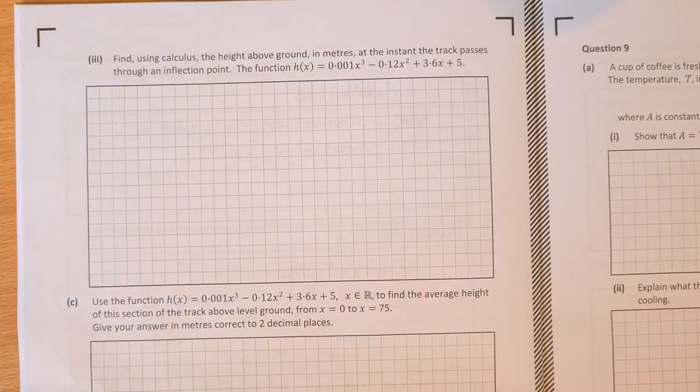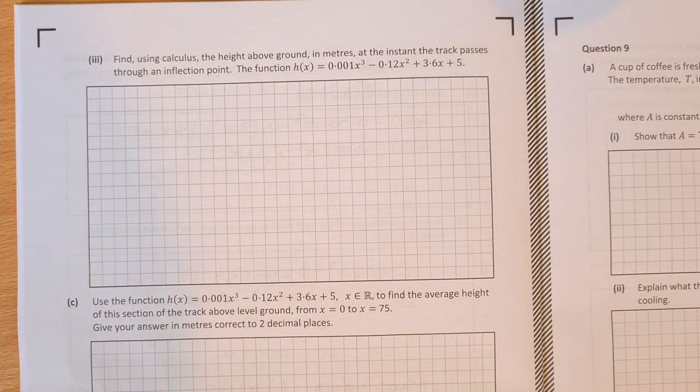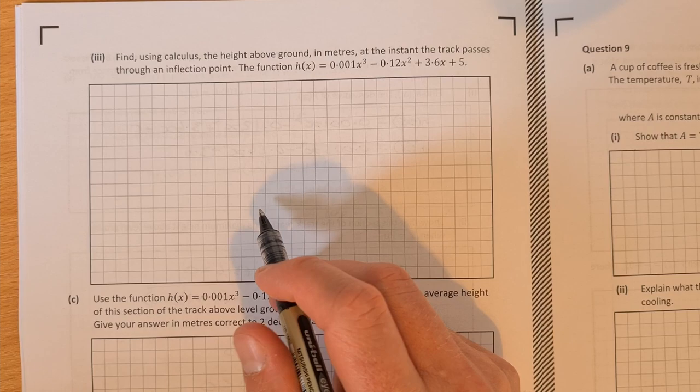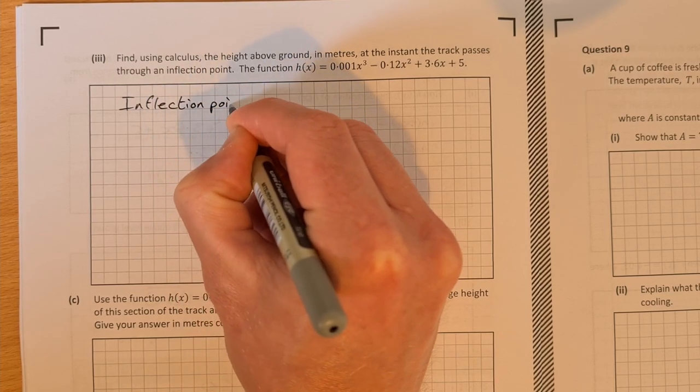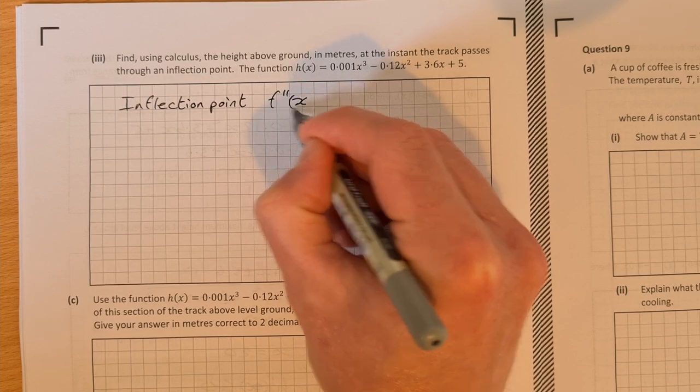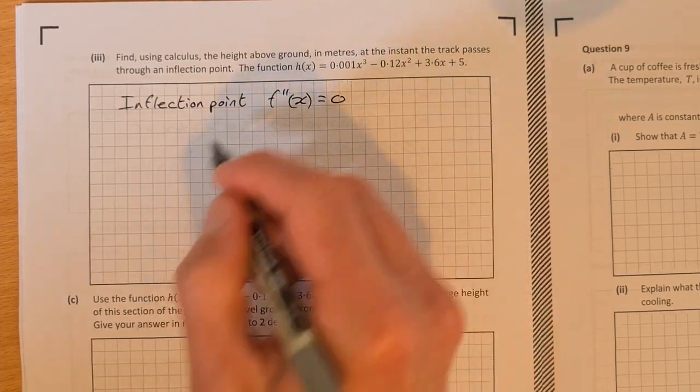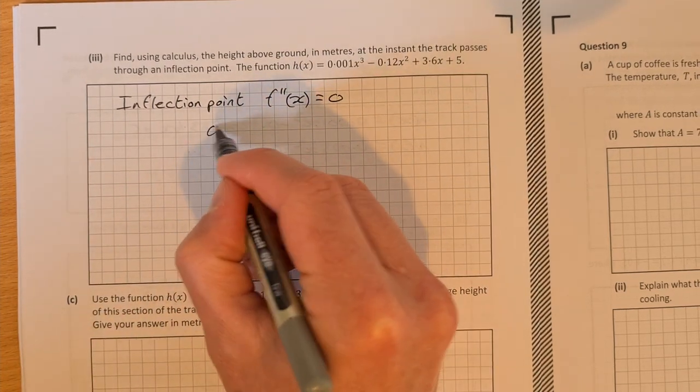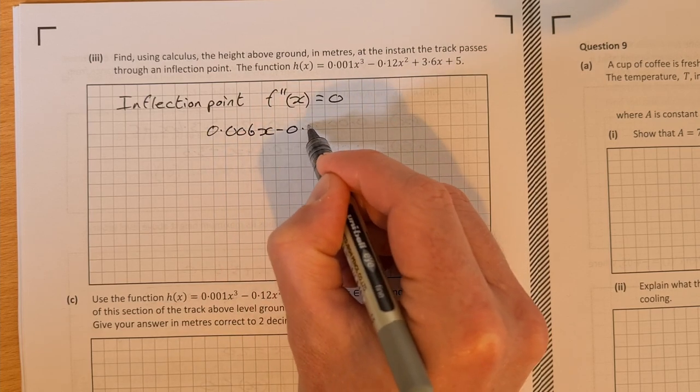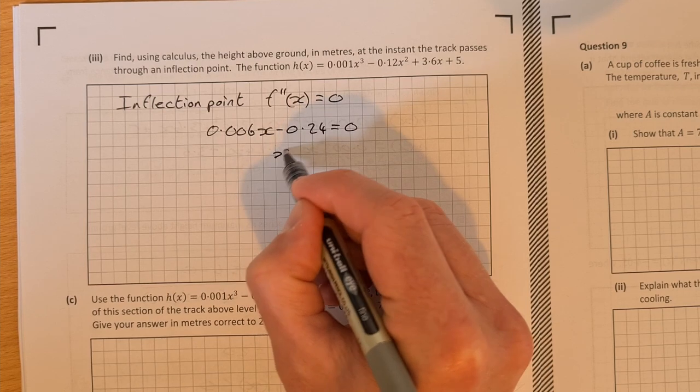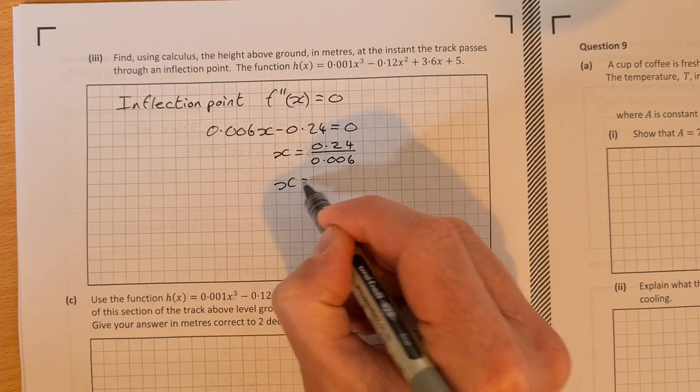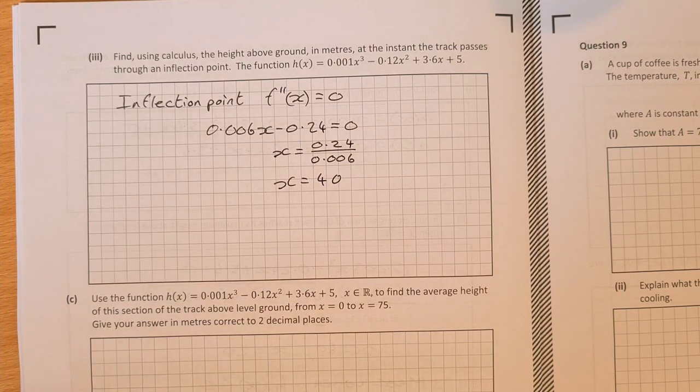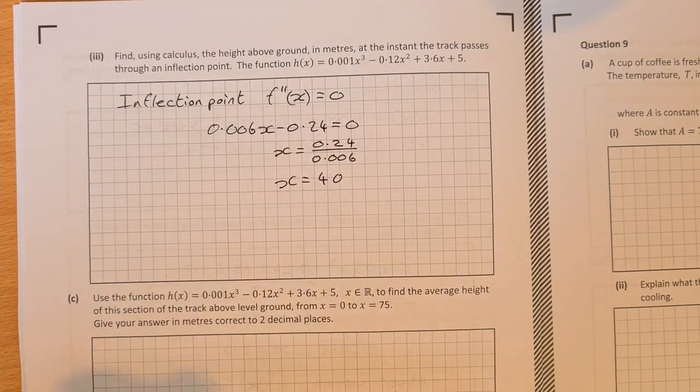On to the next part then. Find using calculus the height above ground in meters at the instant the track passes through an inflection point. The function is given to us again just to remind us here because it was on the previous page. So an inflection point. At an inflection point, we know that the second derivative or f double dash of x is equal to 0. So I'm going to let the second derivative equal to 0.006x minus 0.24 is equal to 0 and then just solve for x. So x is equal to 0.24 over 0.006, x is equal to 40.